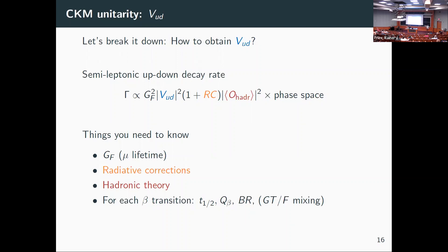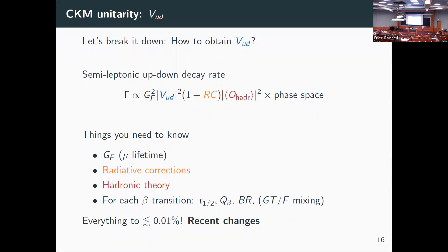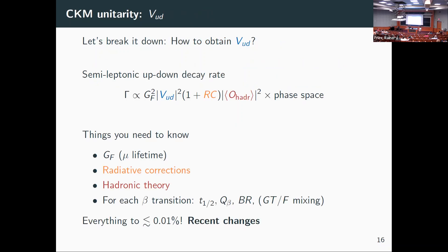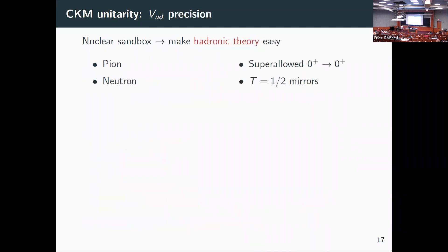You need to know all of this at the 10^-4 level. Over the past three to four years there have been significant changes in the field — quite a bit of a shake-up, but I think for the better. The hardest part is the hadronic theory, so we want to make that as easy as possible. There are four different possibilities: the pion (simplest, a meson with no nuclear structure), the neutron (a single nucleon, no nuclear structure), superallowed 0⁺ to 0⁺ decays, and mirror decays.